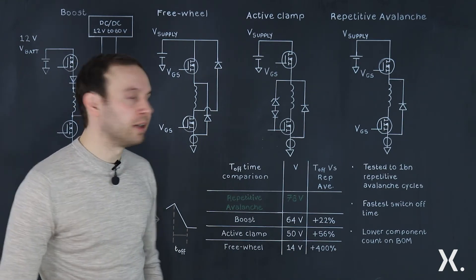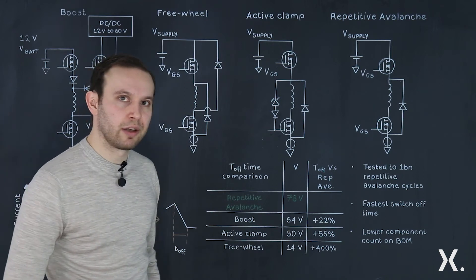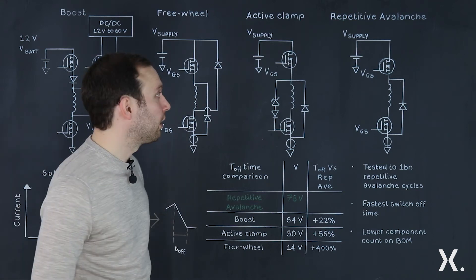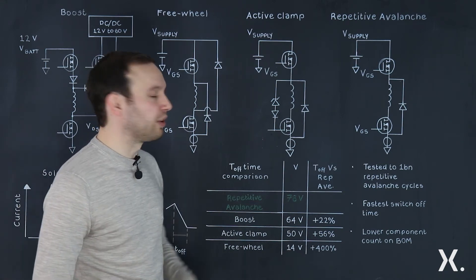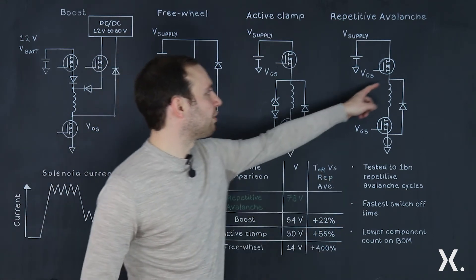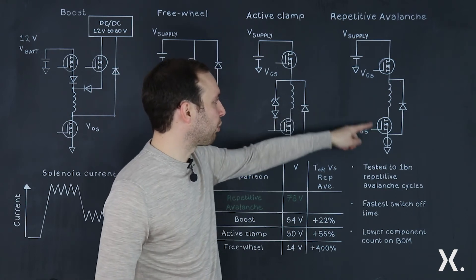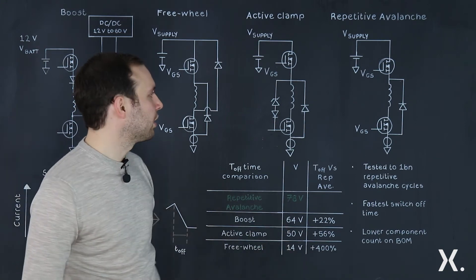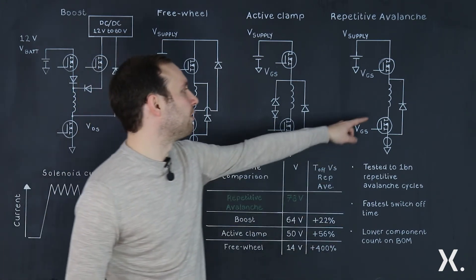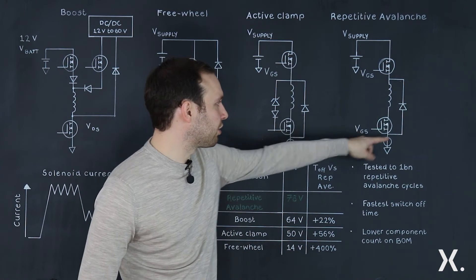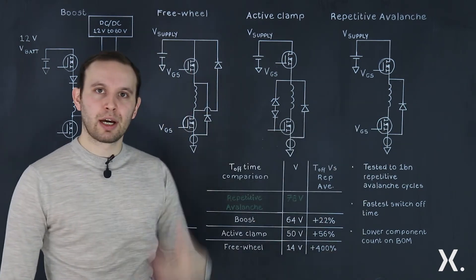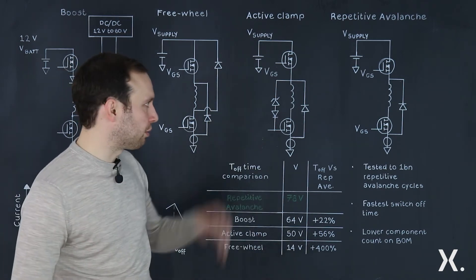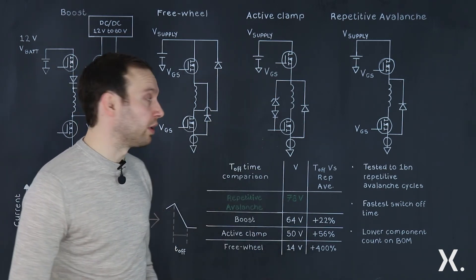The final circuit design is the repetitive avalanche design. You'll notice straight away there are fewer components inside this circuit. The energy inside the inductor is dissipated through the low side driving MOSFET via the phenomenon of avalanche. The VDS — the voltage across the device — exceeds the stated breakdown voltage of the product and dissipates the energy through avalanche through the body diode of the component.